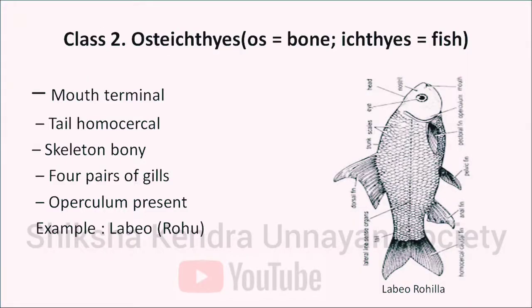The second class is Osteichthyes — os means bone and ichthyes means fish, so these are bony fish. The mouth is terminal and the tail is homocercal, meaning it appears outwardly symmetrical with the backbone passing into the upper lobe. Skeleton is bony. They have four pairs of gills and the operculum is present. Example: Labeo (rohu).